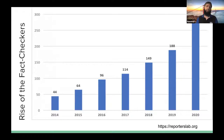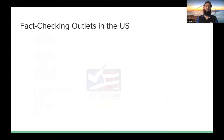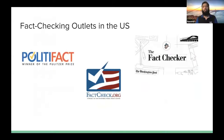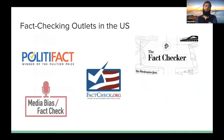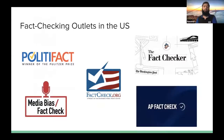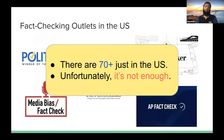In the United States, we have factcheck.org, PolitiFact, the fact-check wing of the Washington Post, media bias fact-check, and AP also has a fact-check wing. However, even though we have about 60 to 70 plus fact-checking outlets in the United States, unfortunately it is not enough. We can ask ourselves: is it because the number is small or for some other reasons? There are multiple reasons.